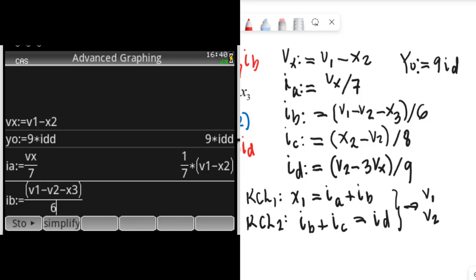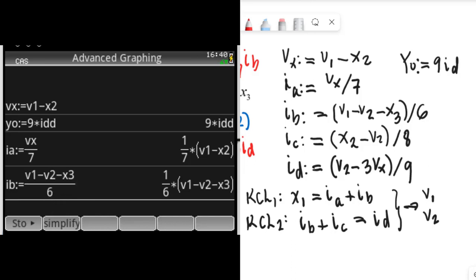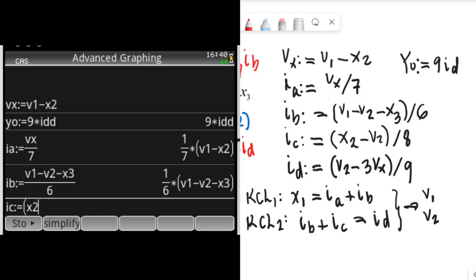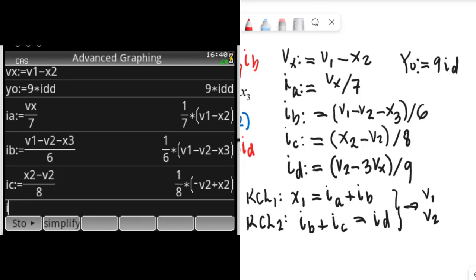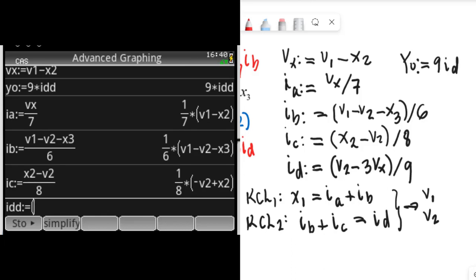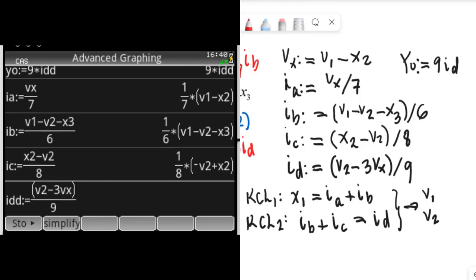V1 minus V2 minus X3 divided by 6. Ic is X2 minus V2 divided by 8. And Id is V2 minus 3Vx divided by 9.